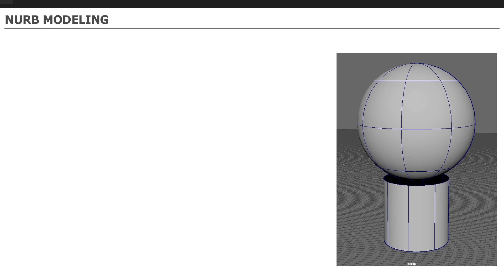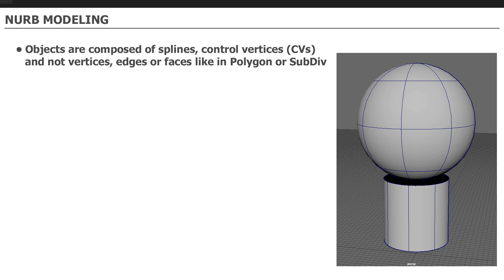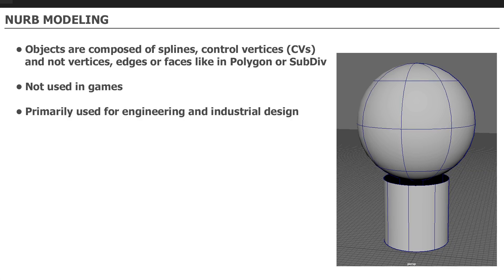The fourth modeling method is NURBS, or spline/curve-based modeling. These objects are very different from polygonal modeling — they are composed of splines and control vertices, not vertices, edges, and faces like polygon or subdivision modeling. NURBS are not used in games and are primarily used in engineering and industrial design. However, you can create NURBS and then convert them to polygons so they can be used in game. It's often used as a technique to create complex surfaces that NURBS are very good at, then convert those surfaces to polygons.